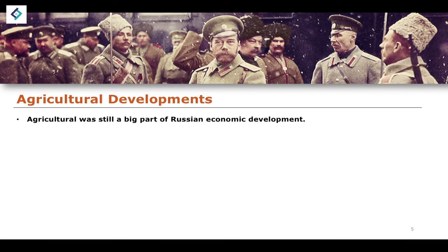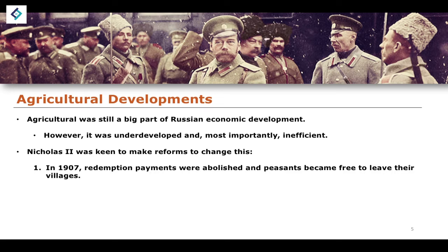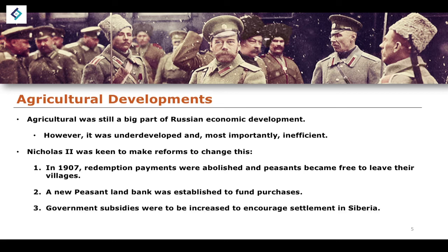When it comes to agricultural developments, the agricultural sector was still an incredibly large but underdeveloped and inefficient part of the Russian Empire's economy. Nicholas II was keen to make reforms. In 1907, redemption payments were abolished and peasants became free to leave their villages. A new peasant land bank was established to fund land purchases for those who couldn't afford them. Government subsidies were also increased to encourage settlements outside the western part of the empire, towards Siberia and the Far East.